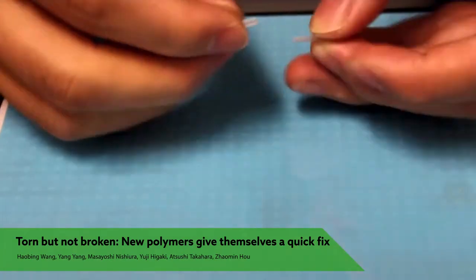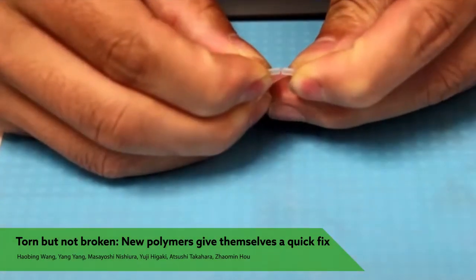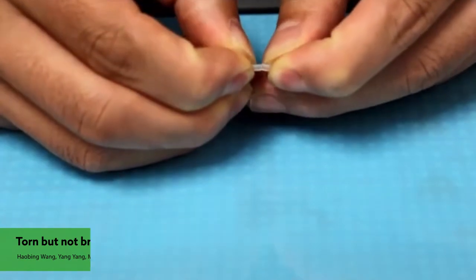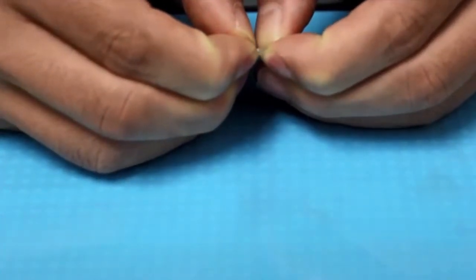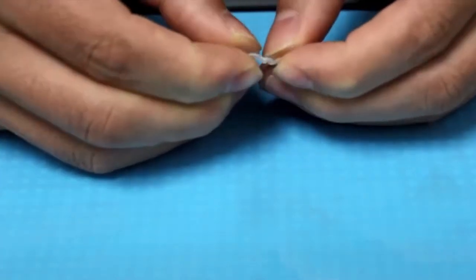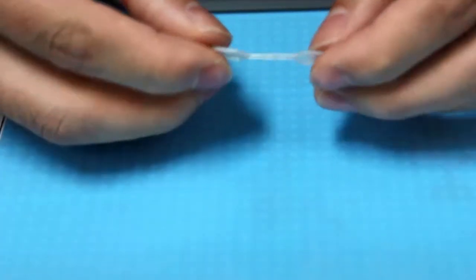It might seem like something straight out of a comic book fantasy, but this self-healing material is all real. Able to repair itself in mere minutes, with practically no external input, this new class of polymer could hold the key to making plastics nearly invincible.